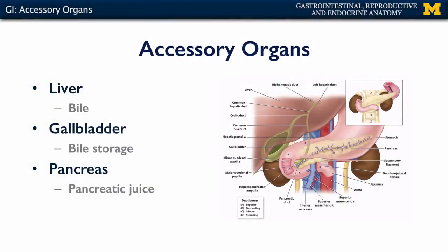Let's talk about the accessory organs that serve the foregut. The accessory organs that serve the foregut consist of the liver, gallbladder, and the pancreas. The liver secretes bile. The gallbladder stores the bile that is then conducted down to meet up with the main duct of the pancreas, which is secreting pancreatic juice, through the major duodenal papilla into the second part of the duodenum. So chyme is meeting up with secretions of the liver and the pancreas.